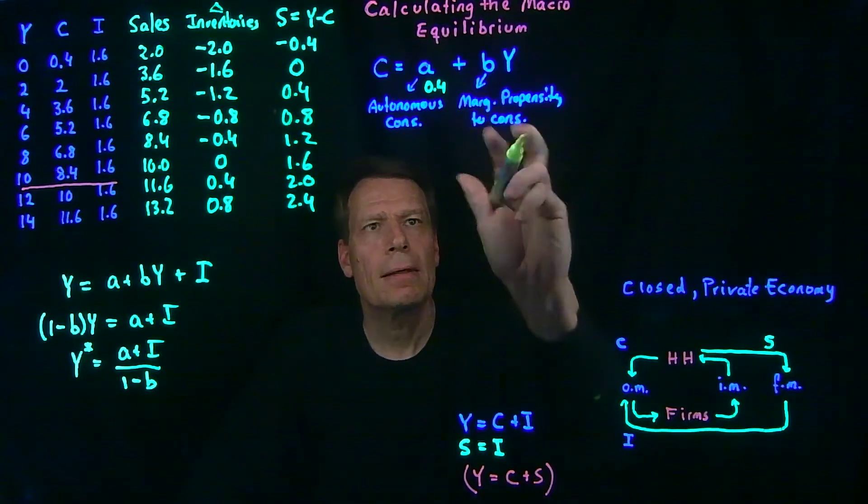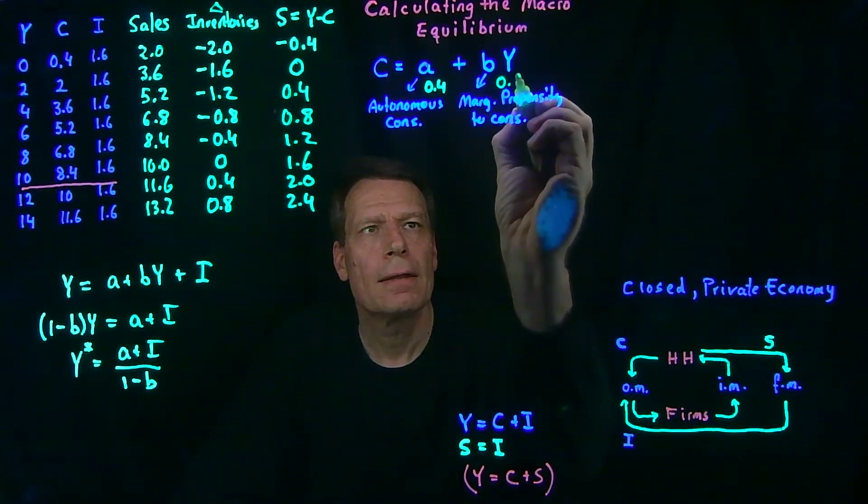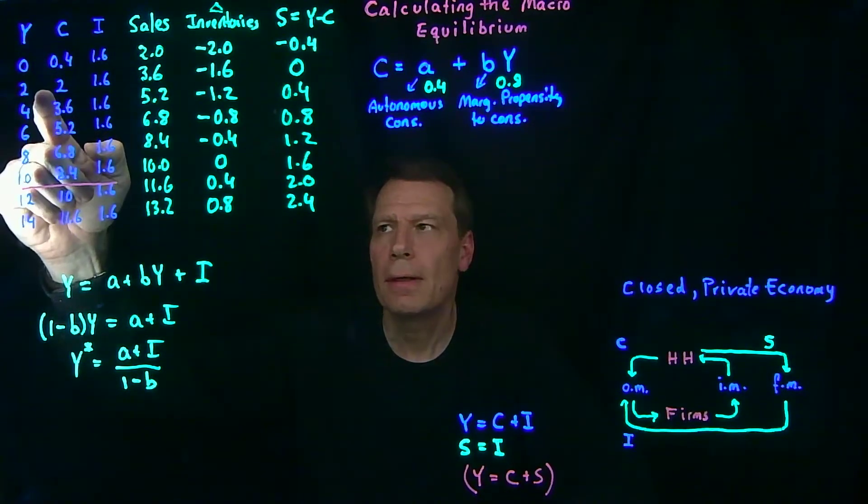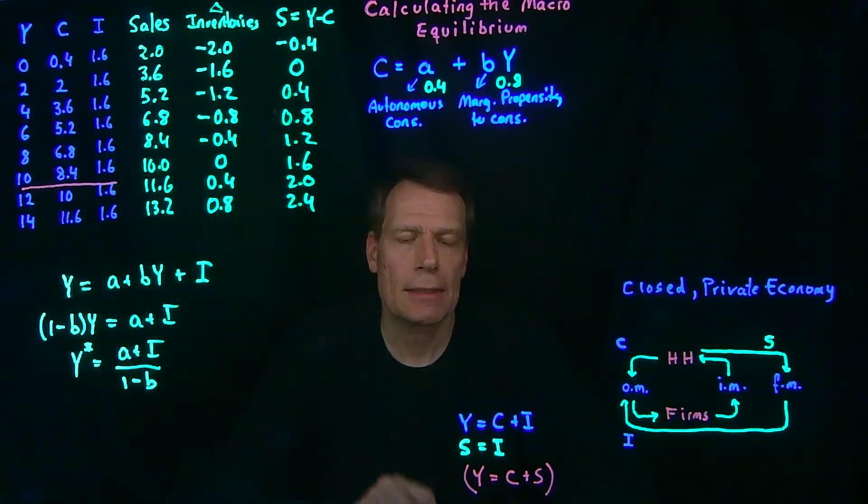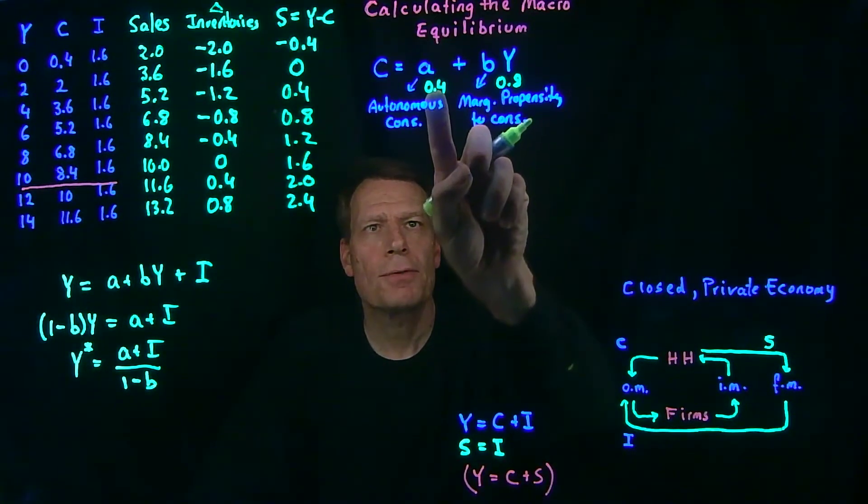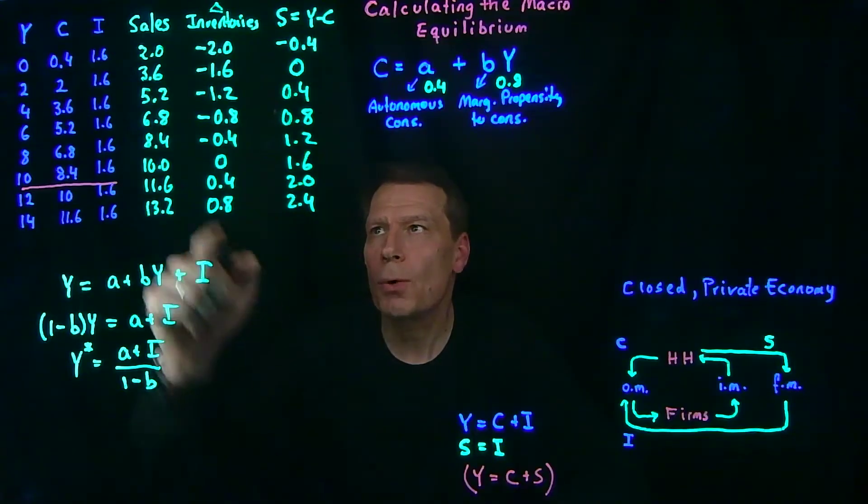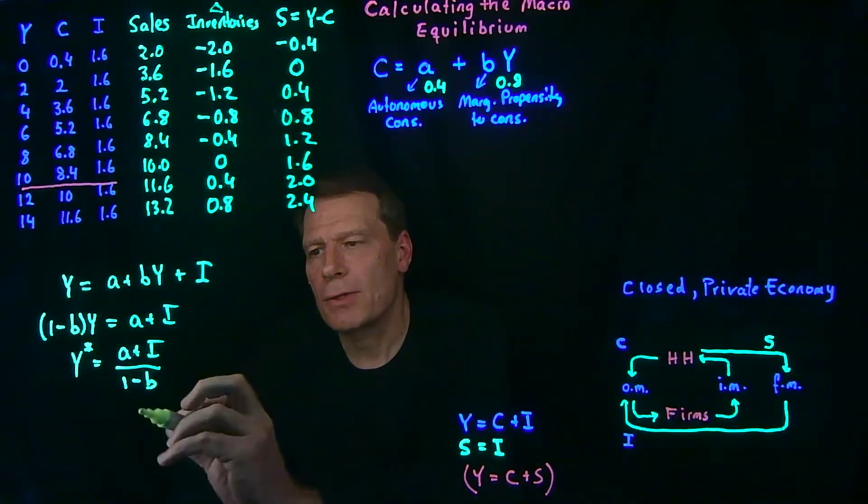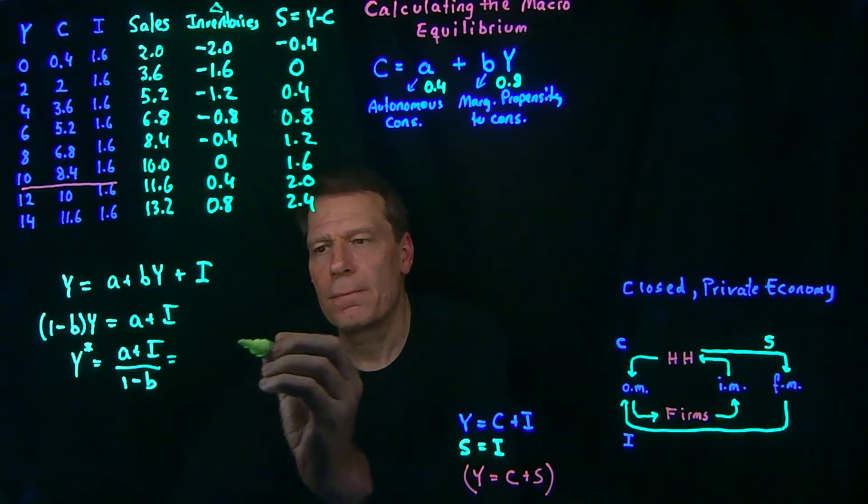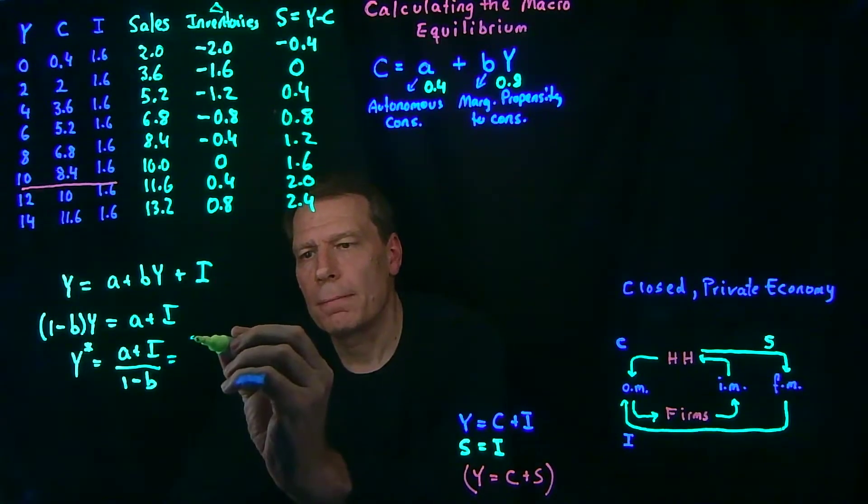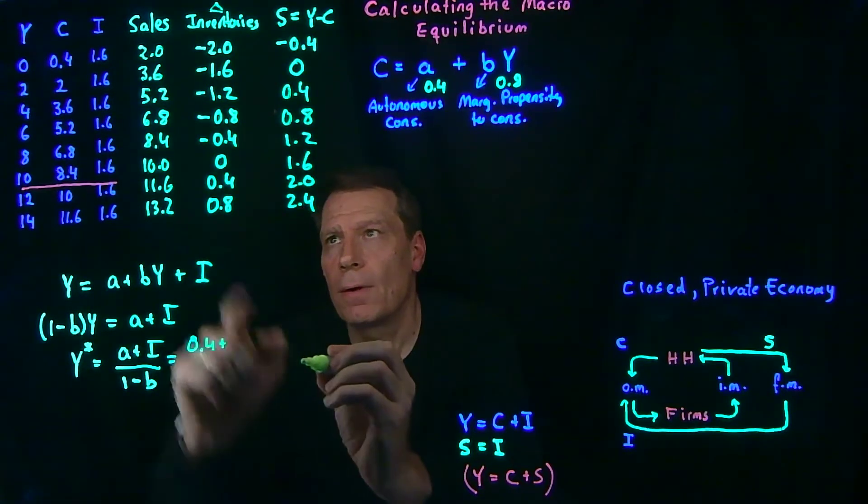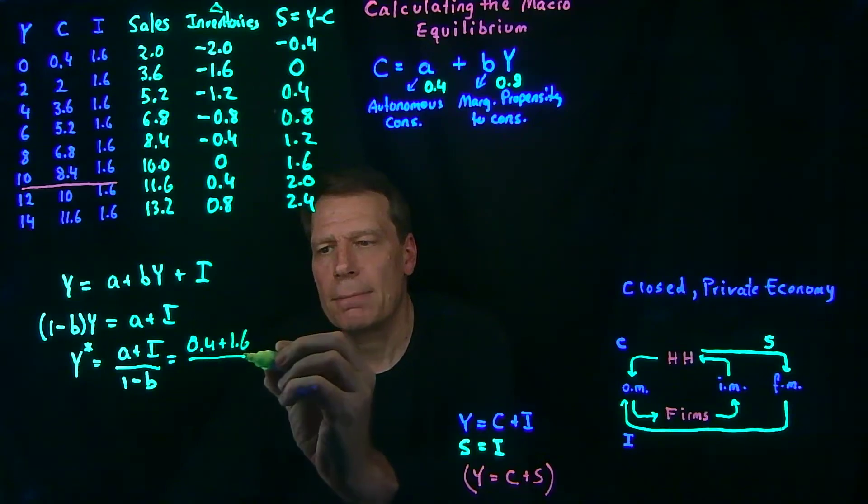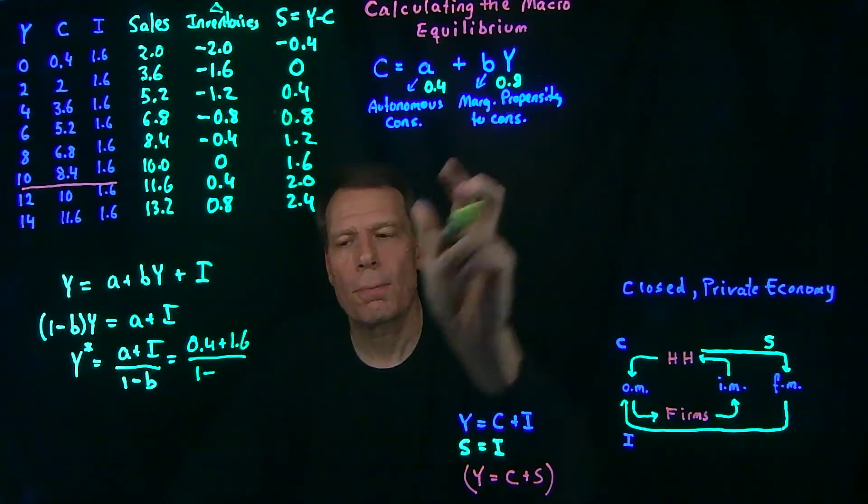That means that B is 0.8. They're consuming 80% of the additional income, the 2 billion, 80% is 1.6. So now we have values for A and B, and we know what the value for I is. So we can now plug our values in for this, and we'll get 0.4 plus 1.6 for investment, divided by 1 minus 0.8.